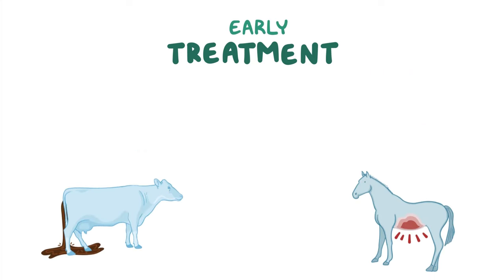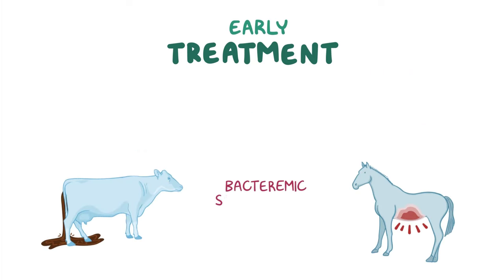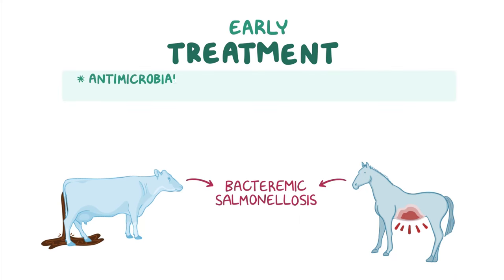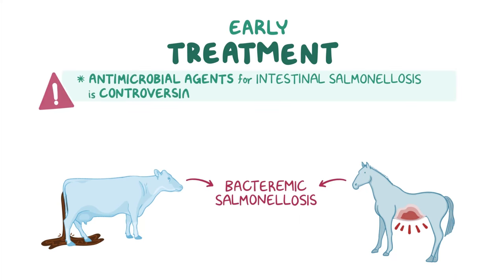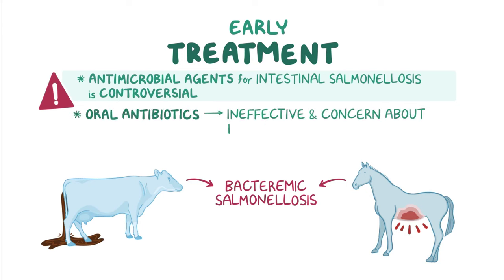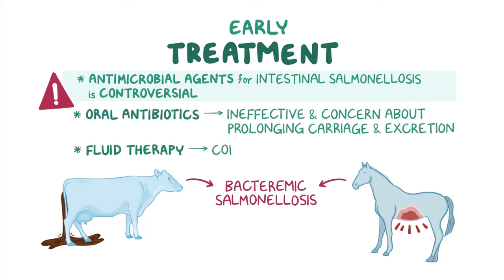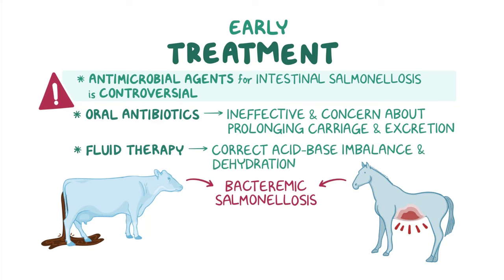Early treatment is essential for bacteremic salmonellosis in animals, but use of antimicrobial agents for intestinal salmonellosis is controversial. Oral antibiotics may be ineffective, and there is concern about prolonging carriage and excretion of the organism. Fluid therapy to correct acid-base imbalance and dehydration may be necessary.